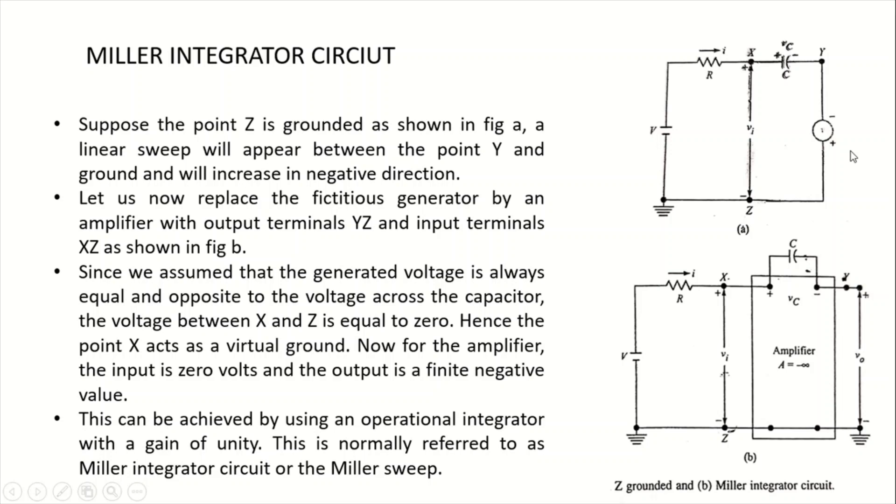Let us now replace this fictitious generator with an actual amplifier with output terminals Y and Z and input terminals X and Z. Since we assumed that the voltage developed across the capacitor and the generated voltage are always equal, the voltage between X and Z will be zero. Hence point X will be acting like a virtual ground. For this amplifier with zero input, we are going to see a finite negative value. This type of circuit is called the Miller sweep circuit or Miller integrator circuit.